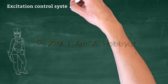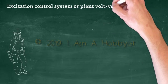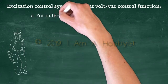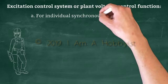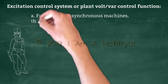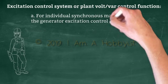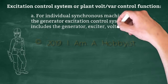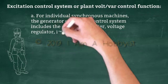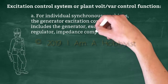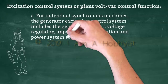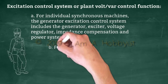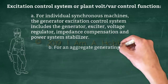Excitation Control System or Plant Volt-Var Control Function. For individual synchronous machines, the generator excitation control system includes the generator, exciter, voltage regulator, impedance compensation, and power system stabilizer.